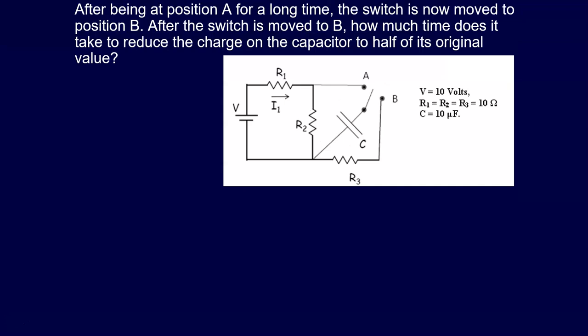And then finally in this one, it says, After being at position A for a long time, the switch is now moved to position B. After the switch is moved to B, how much time does it take to reduce the charge on the capacitor to half of its original value? And so as we were talking before, then now the circuit is this here. So we've got that capacitor and then R3. And again, our capacitor is fully charged.